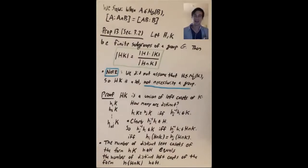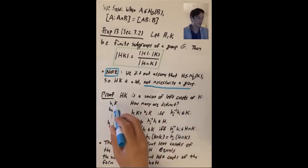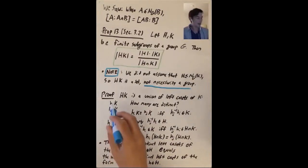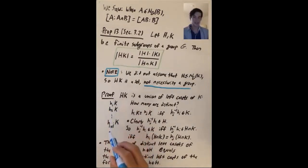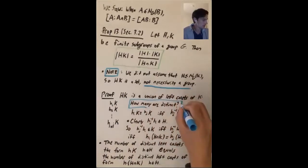The proof involves some clever counting and an application of Lagrange's theorem. The product set HK is a union of left cosets of K: everything of the form h₁K, h₂K, up to the last element in H times K. Everything in HK is in one of these sets, but we want to know how many of these cosets are distinct.